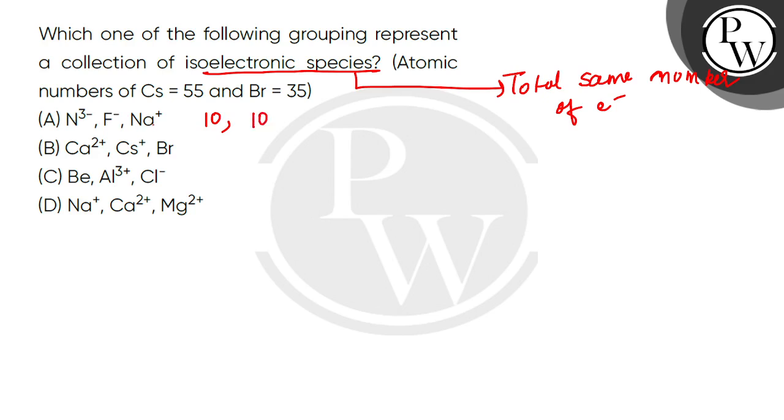Sodium atomic number is 11, so Na+ has 10 electrons. Therefore, the first option shows isoelectronic species with the same total electron count.